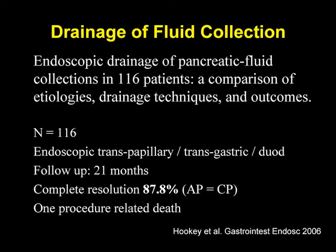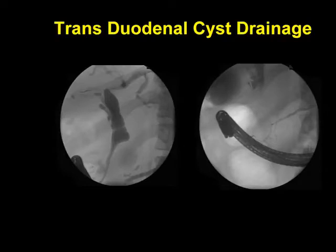As far as the transpapillary approach, here's an image showing the bile duct again — you see the dilated bile duct, confirming that biliary obstruction can occur from pseudocyst. Here's the guide wire going up the bile duct and a guide wire in the pancreatic duct. The next image shows that guide wire in the pancreatic duct now starting to coil in the pseudocyst, with some contrast visible in the pseudocyst. In this particular case, you see a stent placed in the bile duct and a single stent placed in the pseudocyst, leading to subsequent resolution.